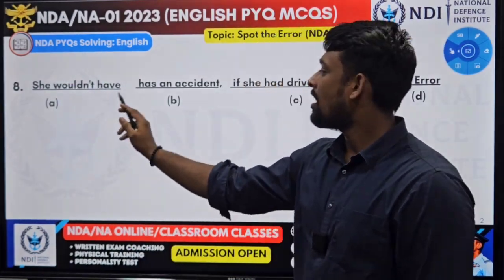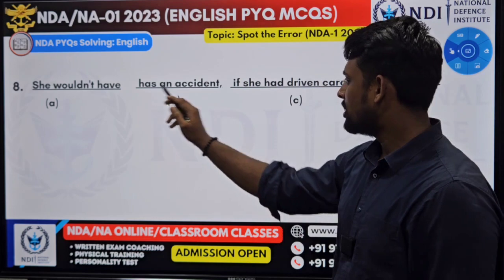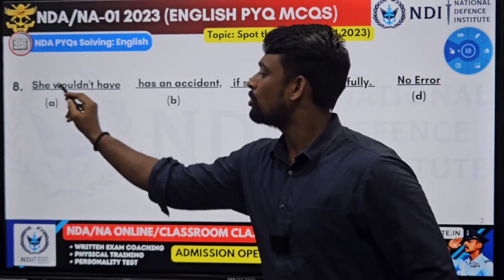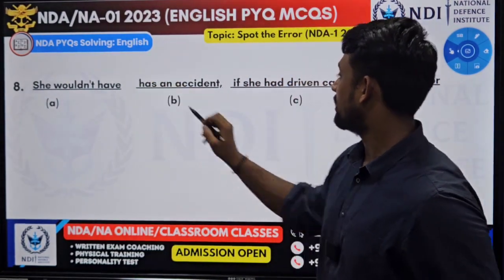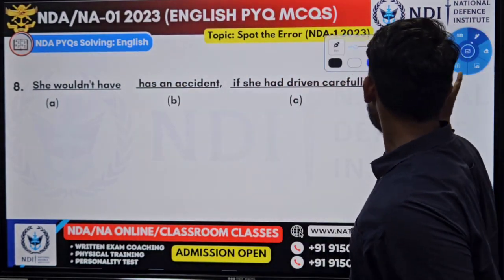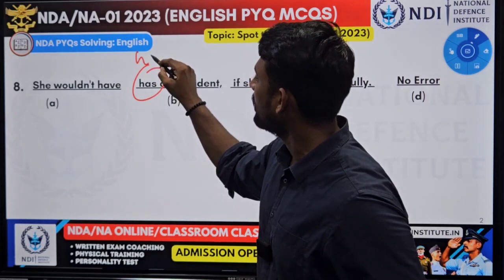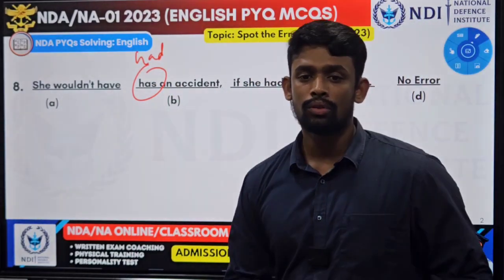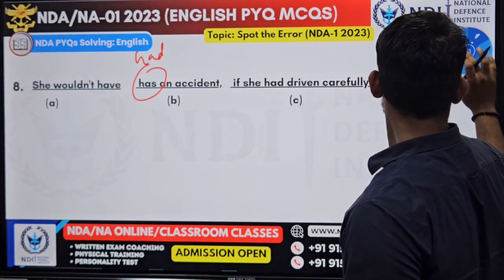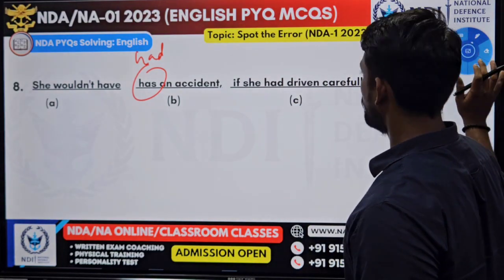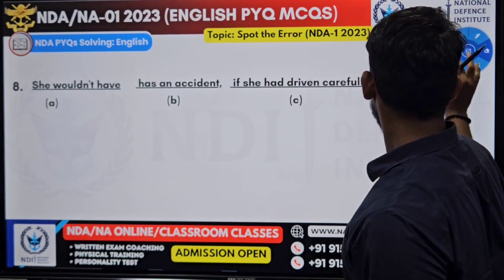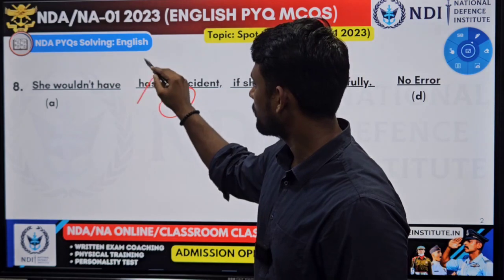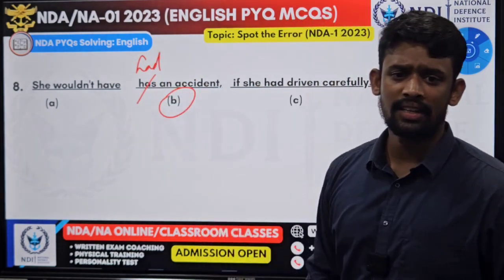Question eight: 'She wouldn't have has an accident if she had driven carefully.' It should be 'she wouldn't have had an accident' — it is not 'has', it is 'had'. You have to know that subject-verb agreement and preposition will make up most of your grammar part. The answer is option B; 'had' is the correct answer for question number eight.